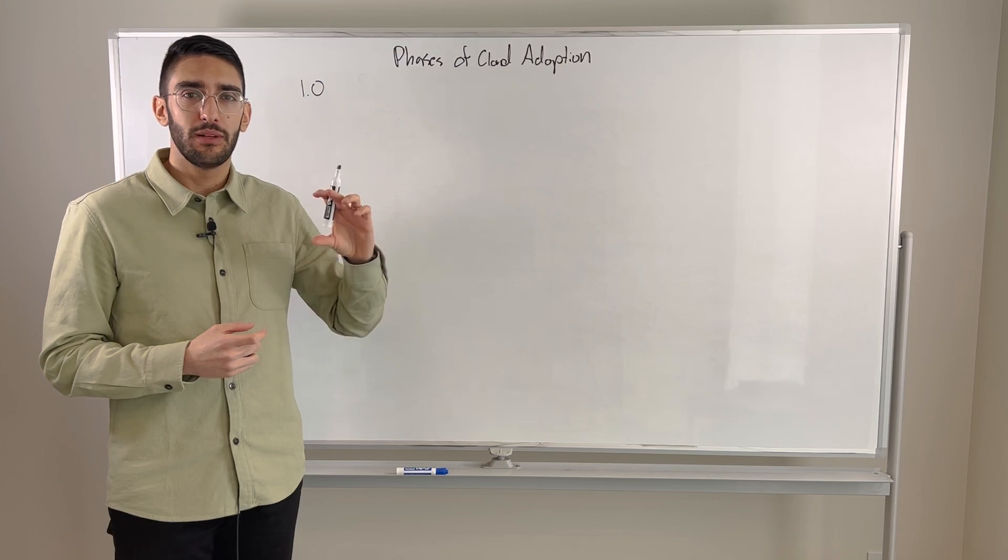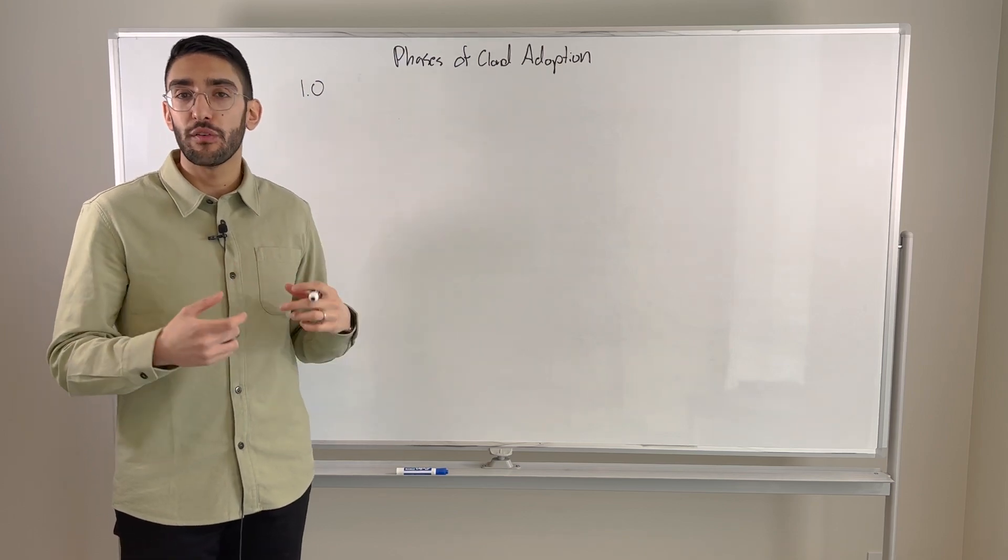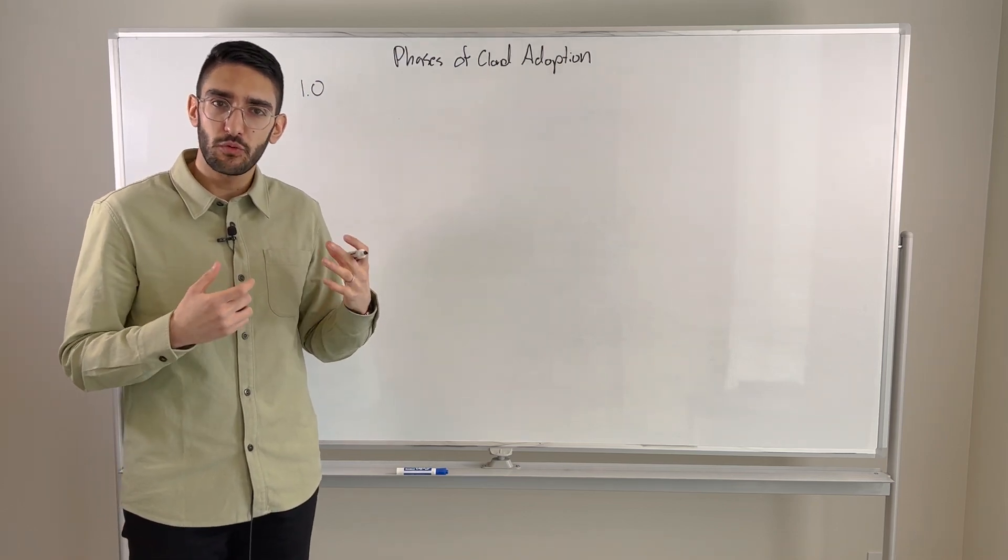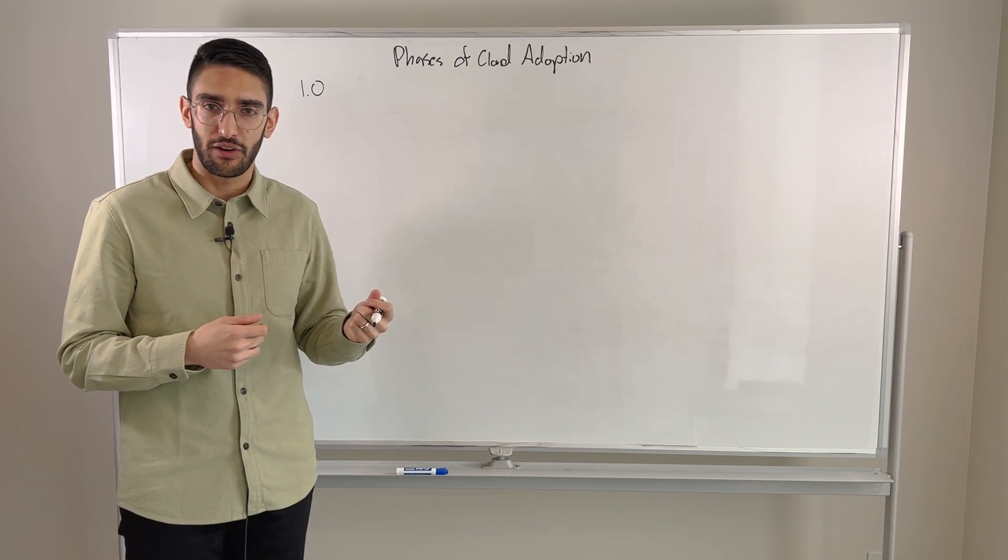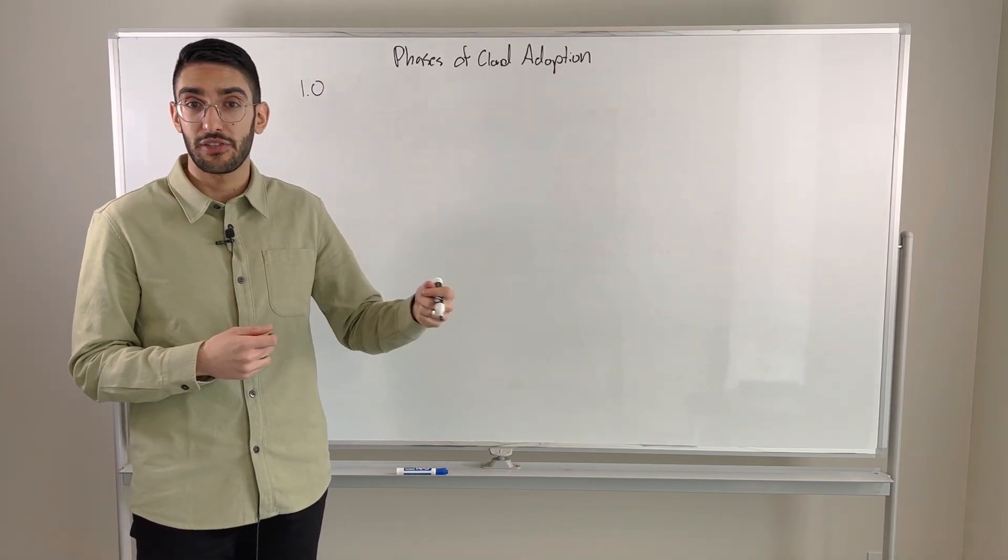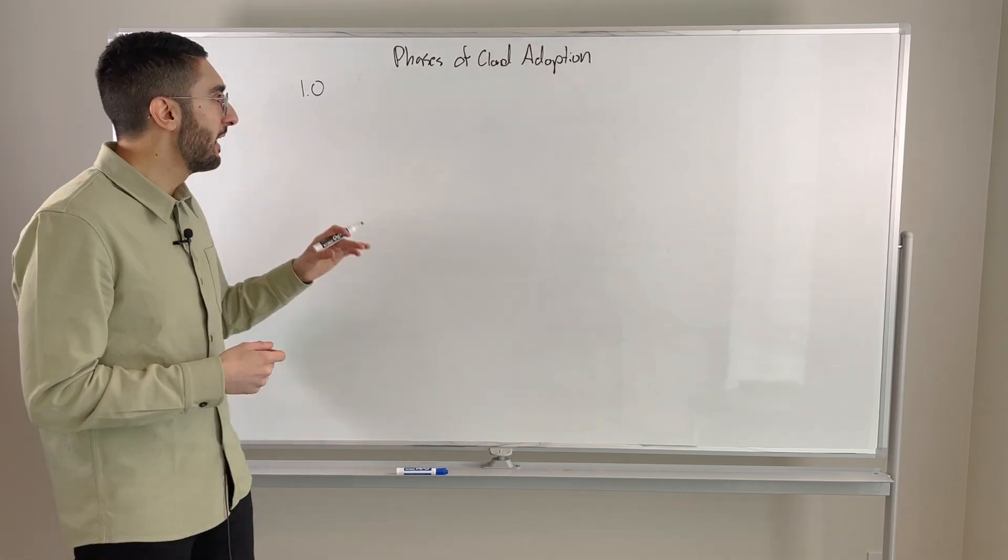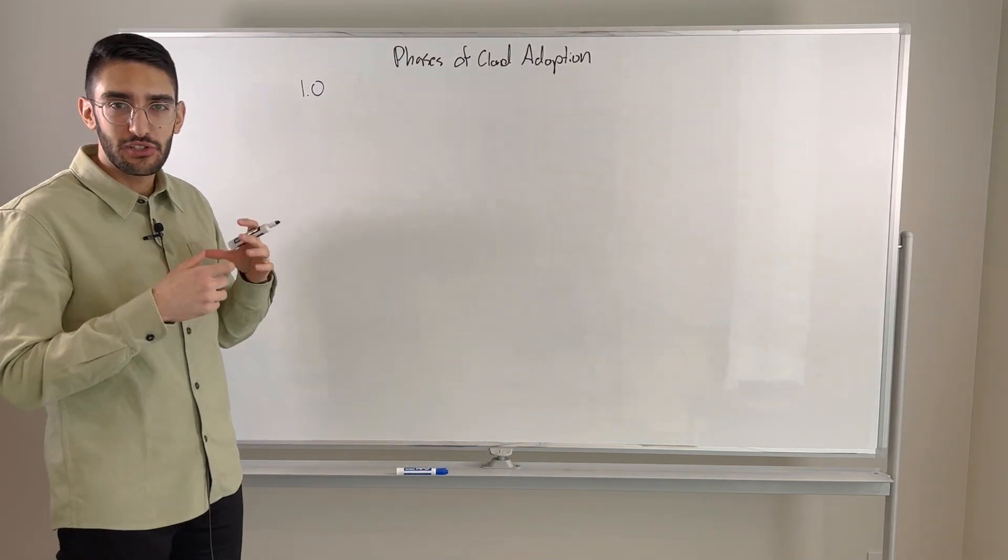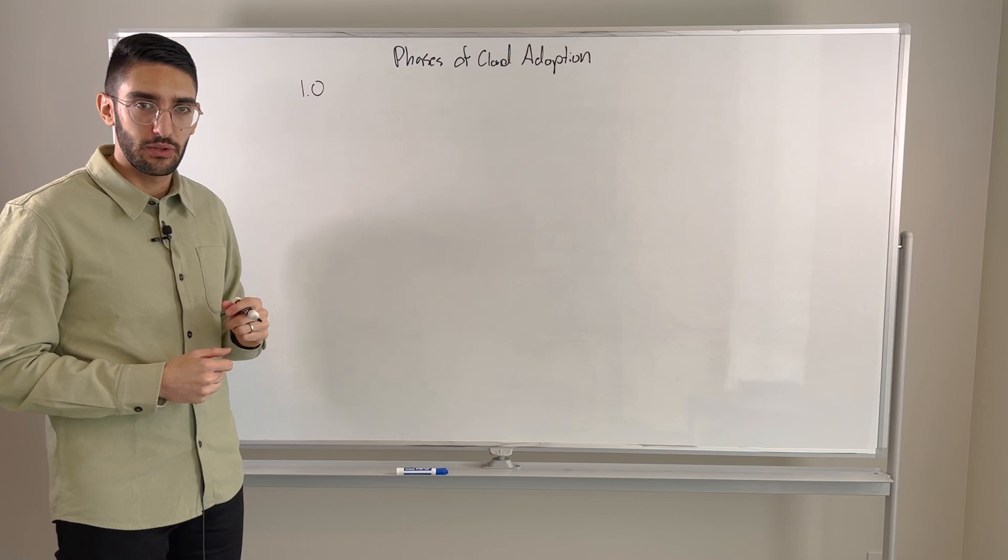So how do we start to embrace cloud as part of our digital transformation? It's really a focus on improving our agility of our development teams, really enabling teams to deliver applications faster and more easily. And so typically that becomes the starting point, the catalyst for an organization to start with cloud.